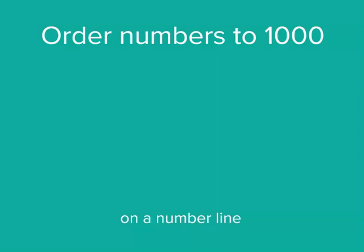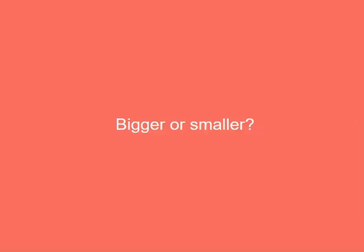In this video, we're going to use a number line to look at how we can put some numbers in order. When we're ordering, we're thinking of whether something's bigger or smaller.